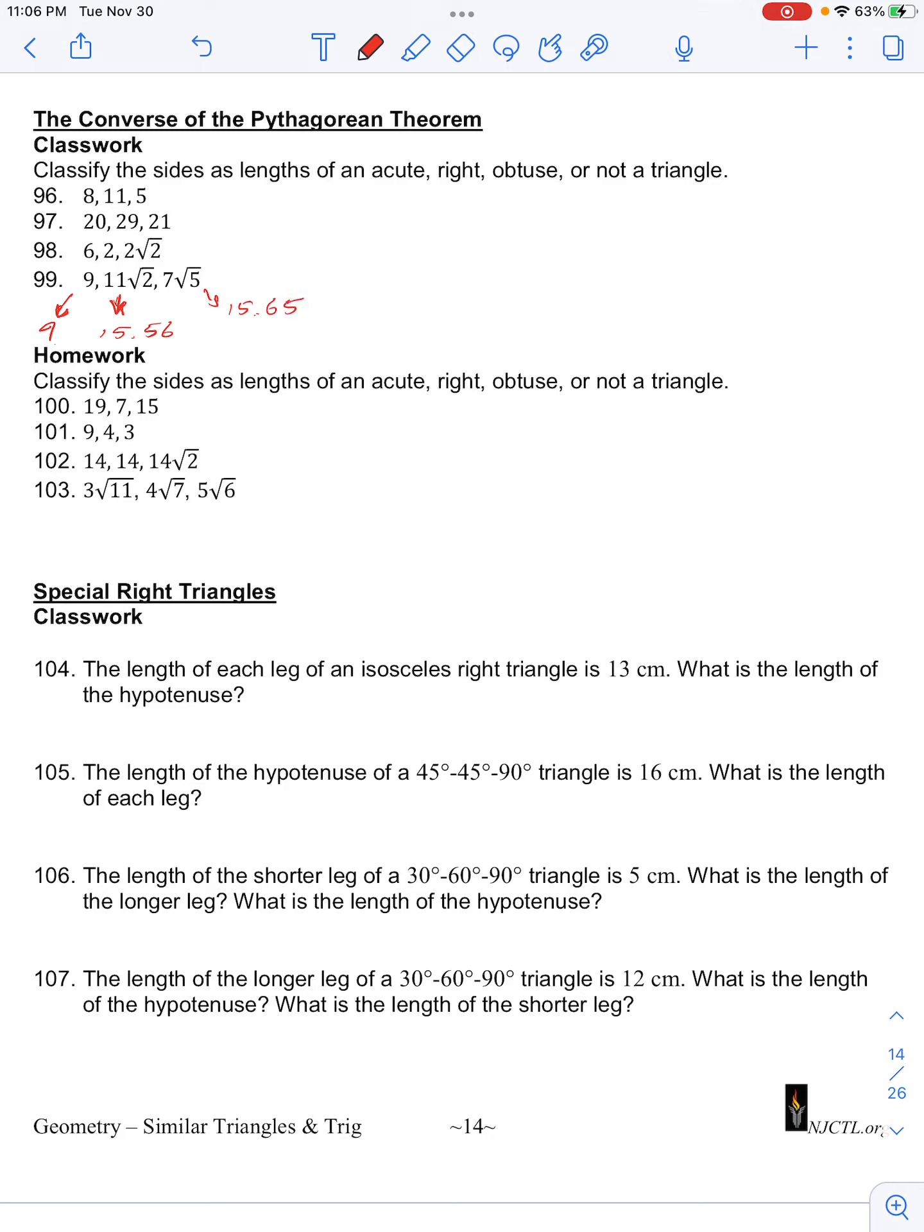So we know that the sum of the two shorter sides, 9 and 15.56, is greater than the length of the longest side, 15.65.